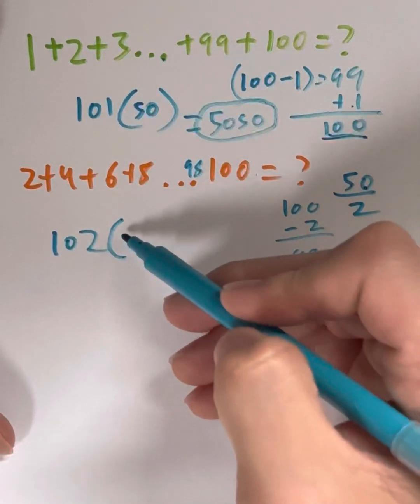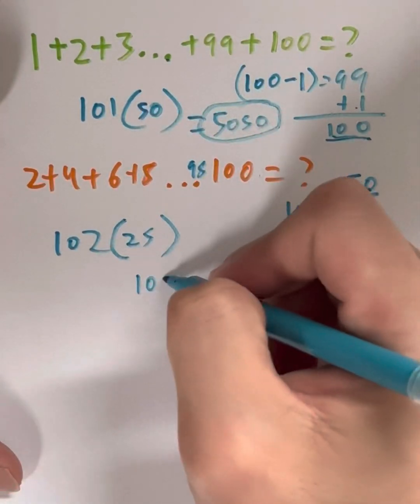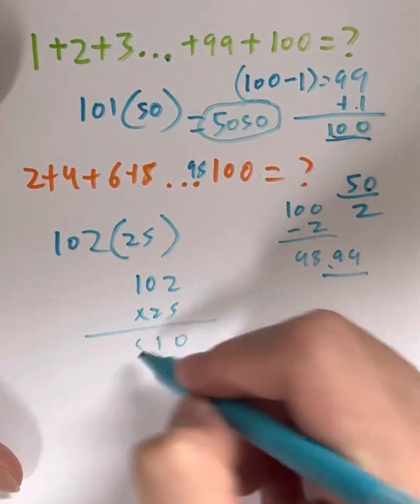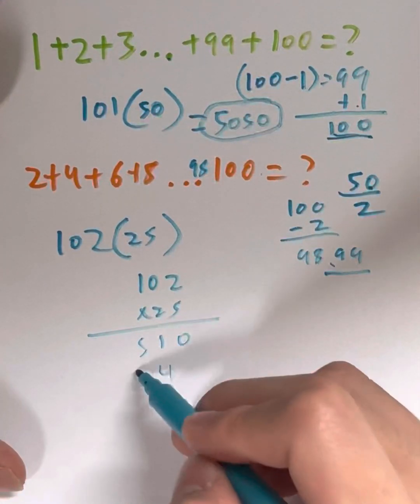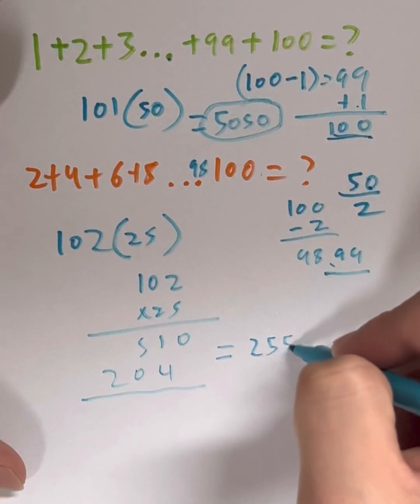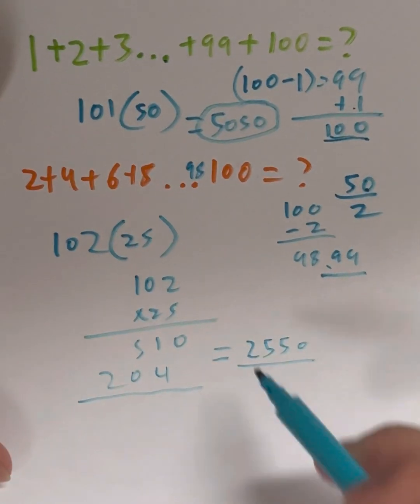Magic number 102 times number of pairs, 25. What's that equal to? 102 times 25 is going to give us 10, 5, and then 4, 0, 2, giving us a total solution of 2,550 as our total sum.